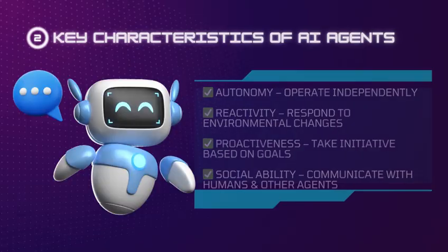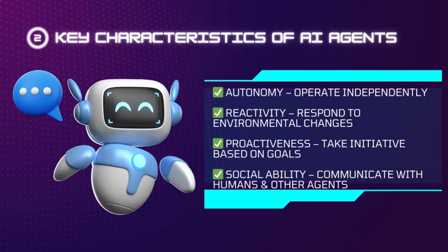Key characteristics of AI agents: Autonomy – they operate independently. Reactivity – they respond to environmental changes. Proactiveness – they take initiative based on goals. Social ability – they communicate with humans and other agents.